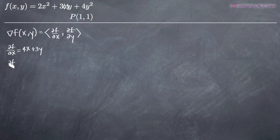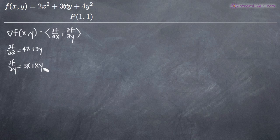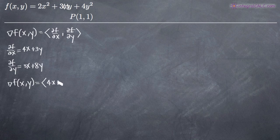For the partial derivative of f with respect to y, the derivative of 2x² is 0 because there's no y variable in that term. The derivative of 3xy is 3x, and the derivative of 4y² is 8y. These are our two partial derivatives, which we plug into the gradient vector to give us the maximum directional derivative: (4x + 3y, 3x + 8y).